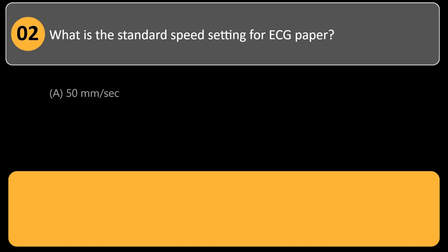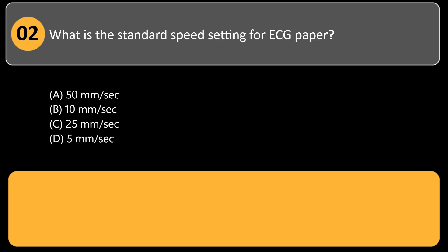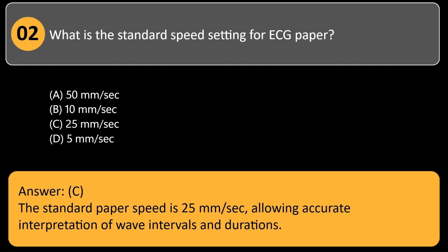What is the standard speed setting for ECG paper? A. 50 mm per second. B. 10 mm per second. C. 25 mm per second. D. 5 mm per second. Answer: C. The standard paper speed is 25 mm per second, allowing accurate interpretation of wave intervals and durations.